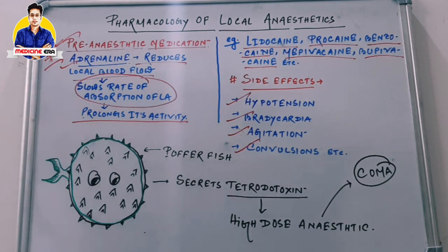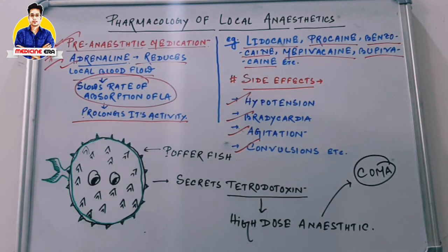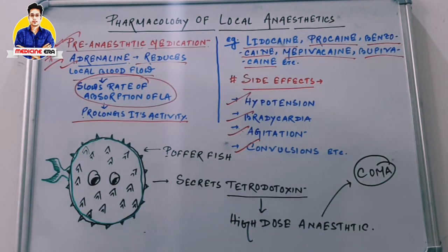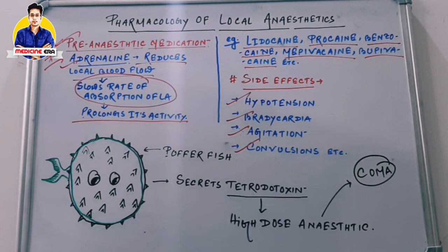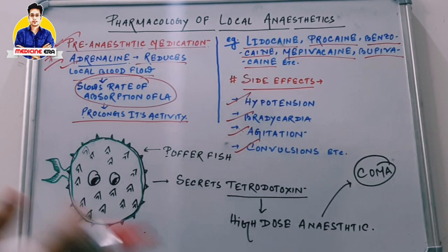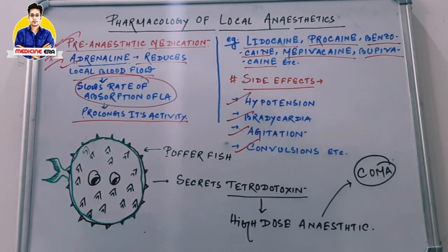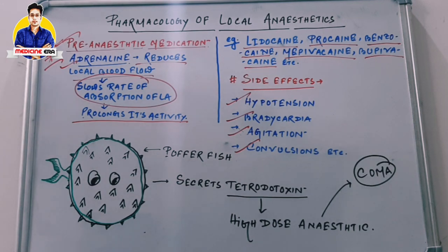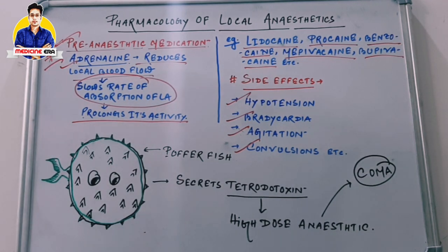In pharmacology of local anesthetics, you need to understand the mechanism of action, the pre-anesthetic medications, examples of local anesthetics, and their side effects — because these drugs are used during surgery. The side effects play a very important role and you must choose a particular local anesthetic after considering its side effects in relation to the patient's condition.